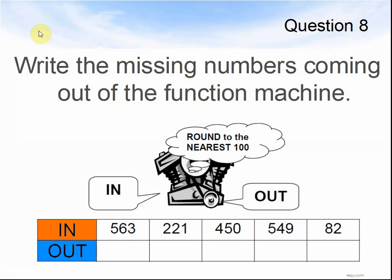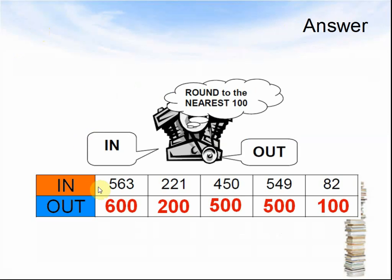Question 8. Write the missing numbers coming out of a function machine. The number goes in, it's rounded to the nearest hundred, and then it's put out again. Pause the video and answer the questions. The answers: 563 rounds to 600; 221 rounds to 200; 450 rounds to 500; 549 rounds to 500; 82 rounds to 100.